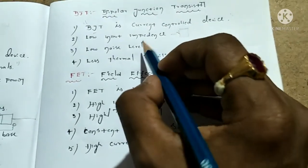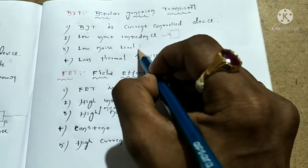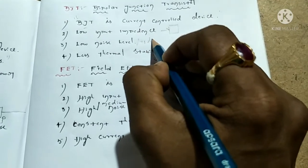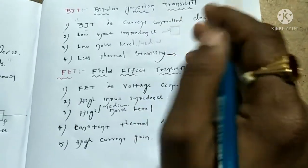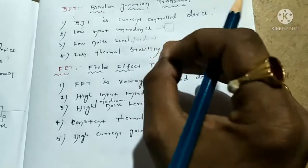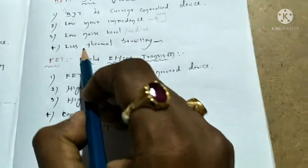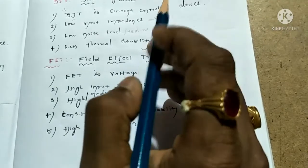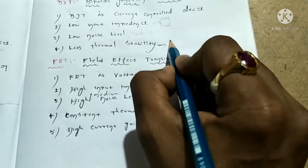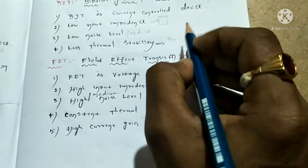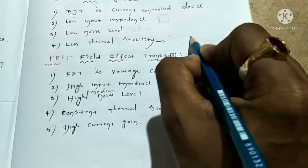BJT has a low or medium noise level — meaning lower sound or signal pollution. BJT also has thermal stability concerns — it can break down under heat stress.